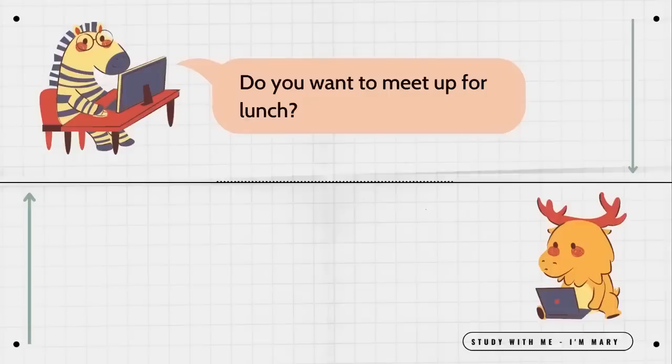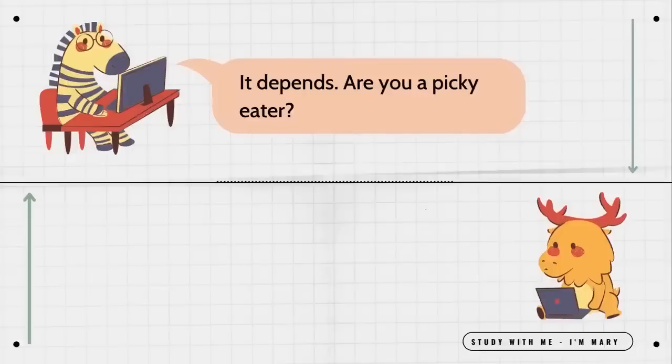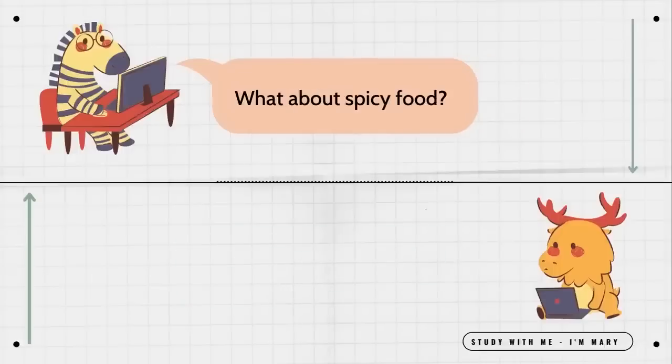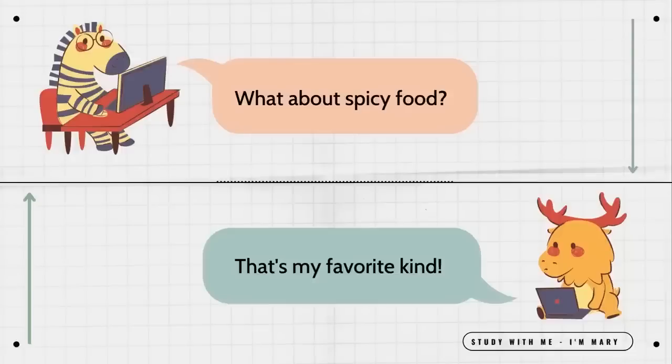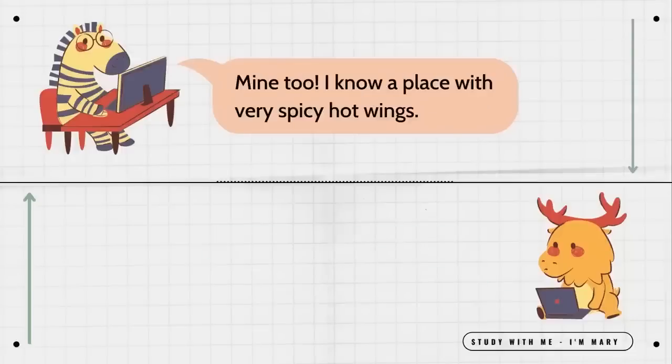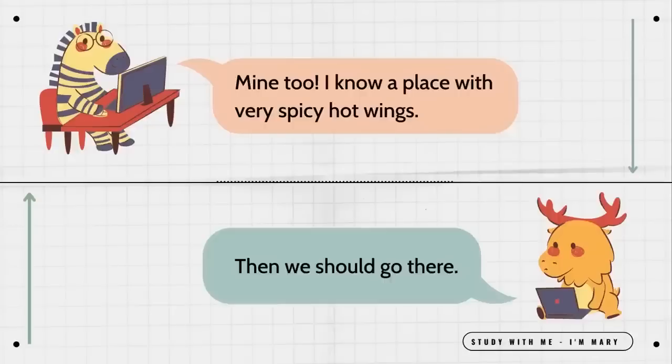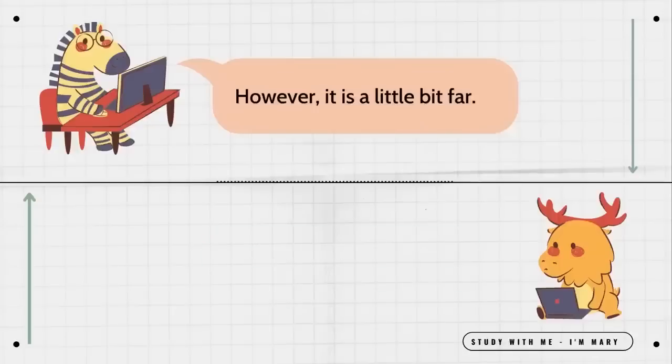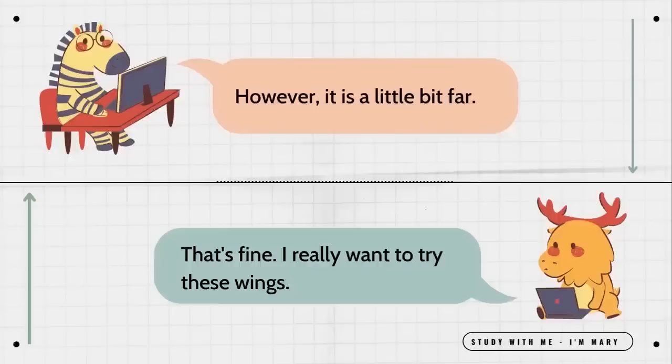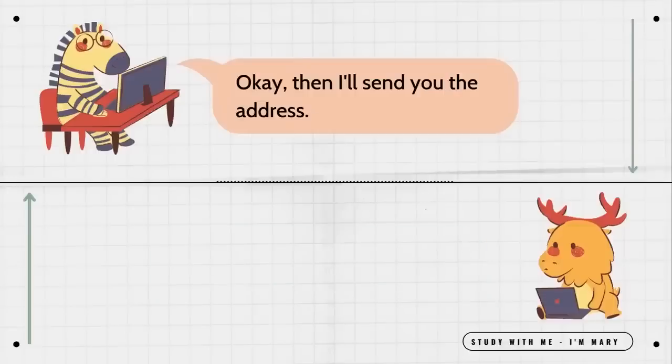Do you want to meet up for lunch? Sure. Where are we going? It depends. Are you a picky eater? Not at all. I like most anything. What about spicy food? That's my favorite kind. Mine too. I know a place with very spicy hot wings. Then we should go there. However, it is a little bit far. That's fine. I really want to try these wings. Okay. Then I'll send you the address. See you there.